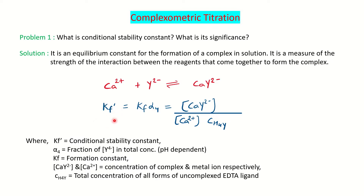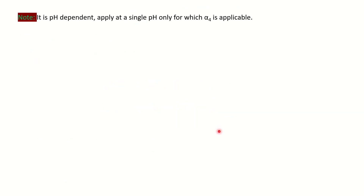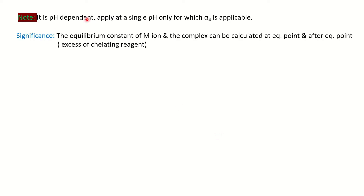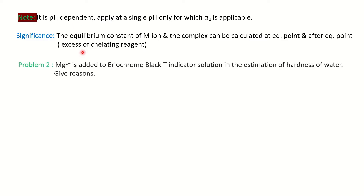The significance of the conditional stability constant is that you can calculate the concentration of the complex as well as the concentration of the metal ion at the equivalence point and after the equivalence point when you have excess of the ligand. This is how you can represent your answer for a two-mark MSc question. The second question is: why is Mg²⁺ added to the EBT indicator solution in the estimation of hardness of water?